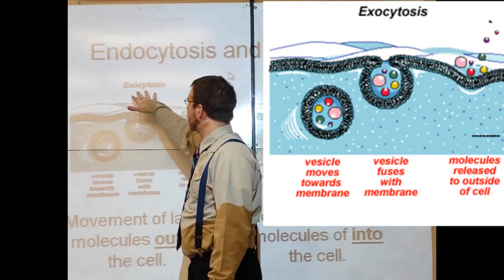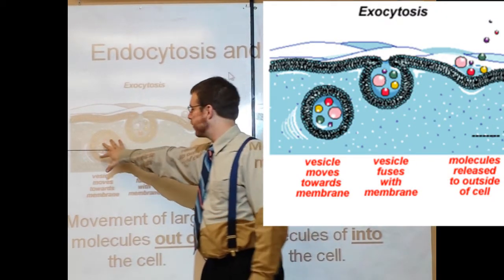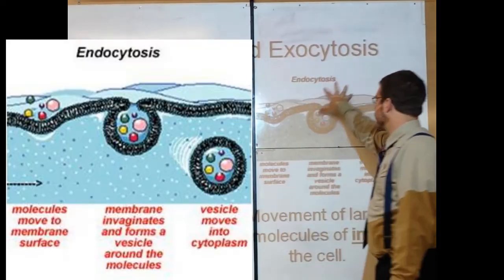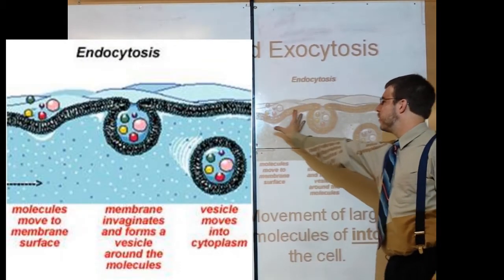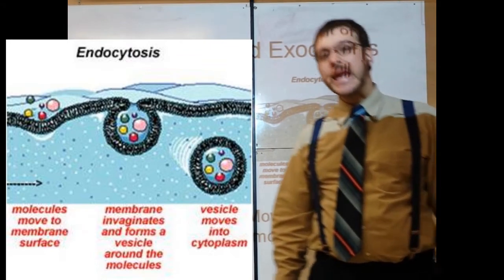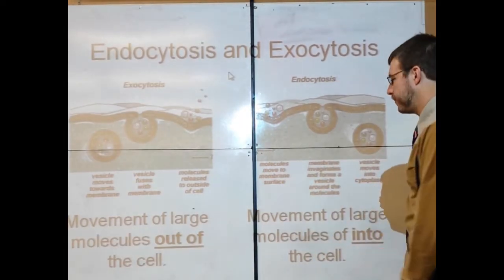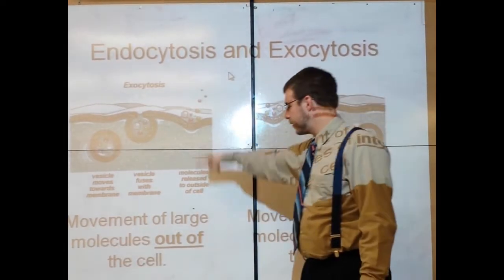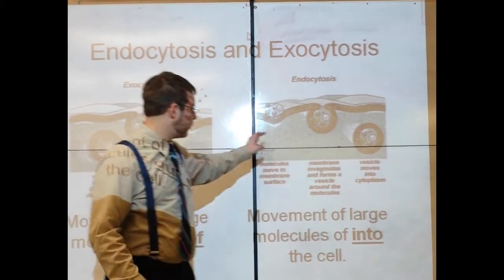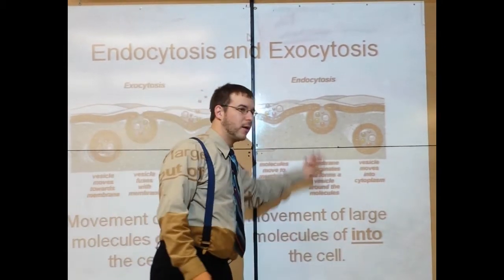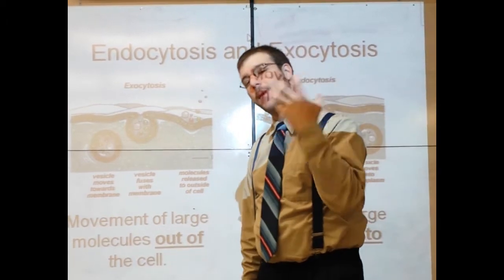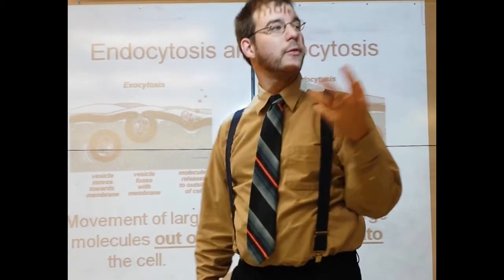Here are the two types. There's exocytosis, when the vesicle moves up and pushes things out. There's endocytosis, where the vesicle envelops and pulls things in. So again: exocytosis moving out of the cell, endocytosis moving into the cell using vesicles, changing the conformation of the cell membrane.